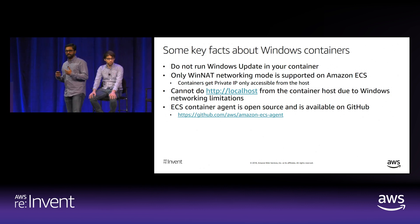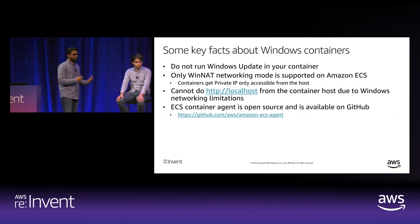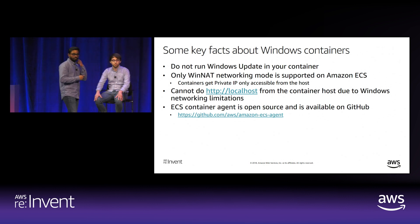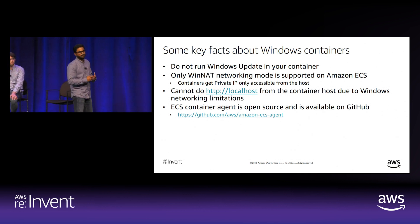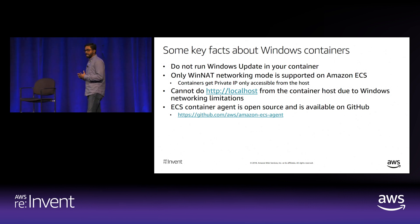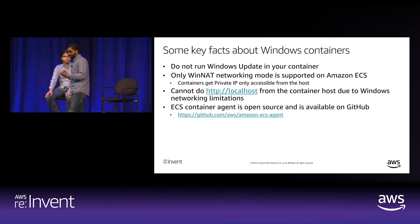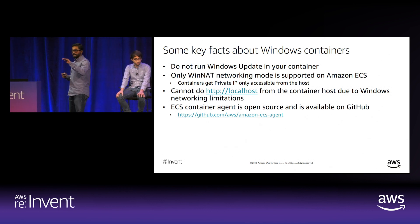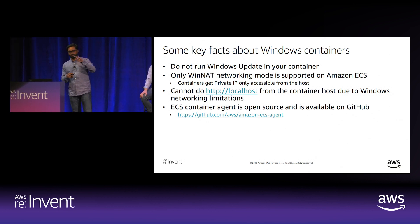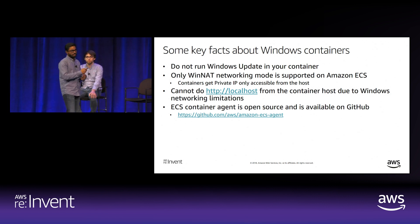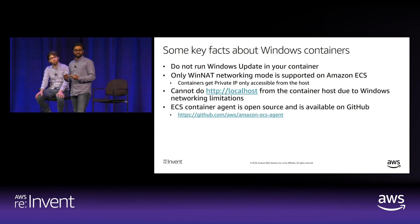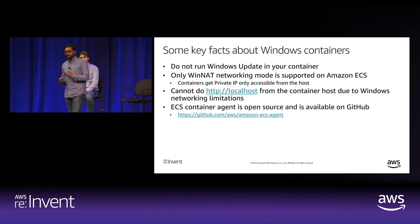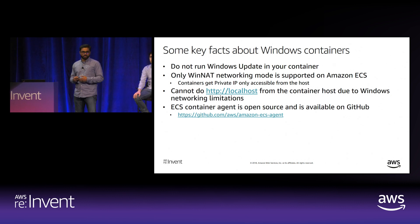Because of how the Linux ecosystem has evolved over decades, the Windows networking stack is not as mature. We only support Win NAT networking mode now—containers get a private IP on the host, and you access the container through that private IP. There are a few constraints you will hit when using Windows containers because of the maturity level of the Windows container ecosystem.